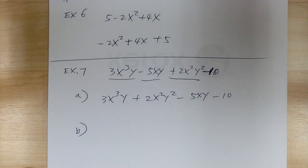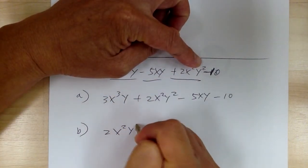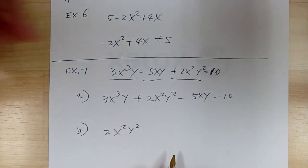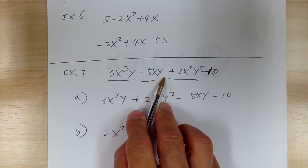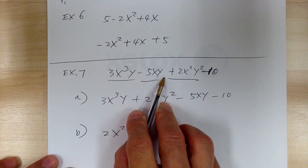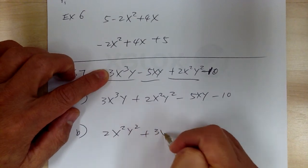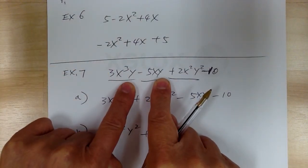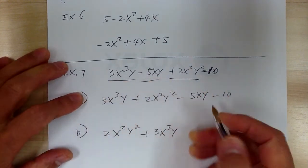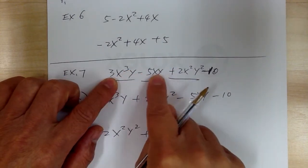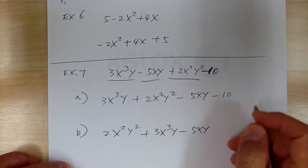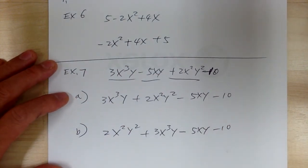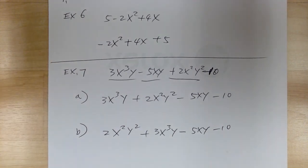Part B: descending power of Y. You want to go down based on Y, so start with the highest: 2X²Y². Your next terms both have Y, so they are tied. You go to the tiebreaker — go to the degree. This term is degree 4, this one is degree 2. You do the higher degree first because you're going down. Then minus 10. Ascending means the opposite — you want to go up. Descending, you go down.